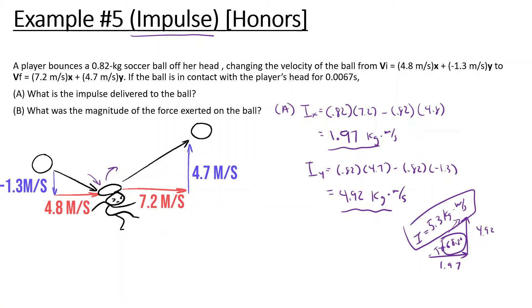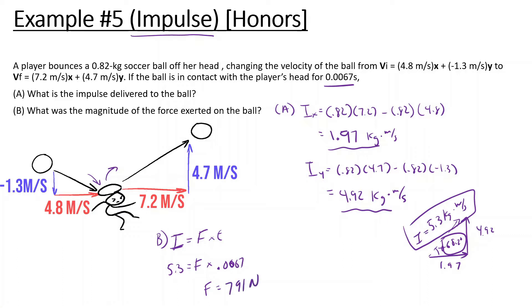For part B, the magnitude of the force exerted on the ball: impulse equals force times time. Impulse is 5.3, and the ball was in contact for 0.0067 seconds. So force equals 5.3 divided by 0.0067, giving us a force of 791 newtons.